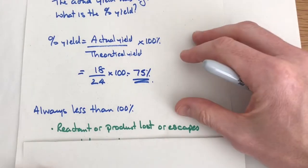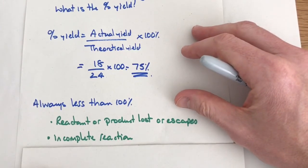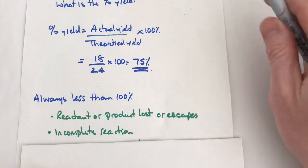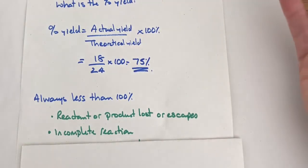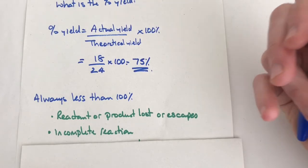You could get reactions that are incomplete. So if you want chemical A to make chemical B, not all of chemical A might react, and therefore you get less of chemical B and therefore your percentage will drop.